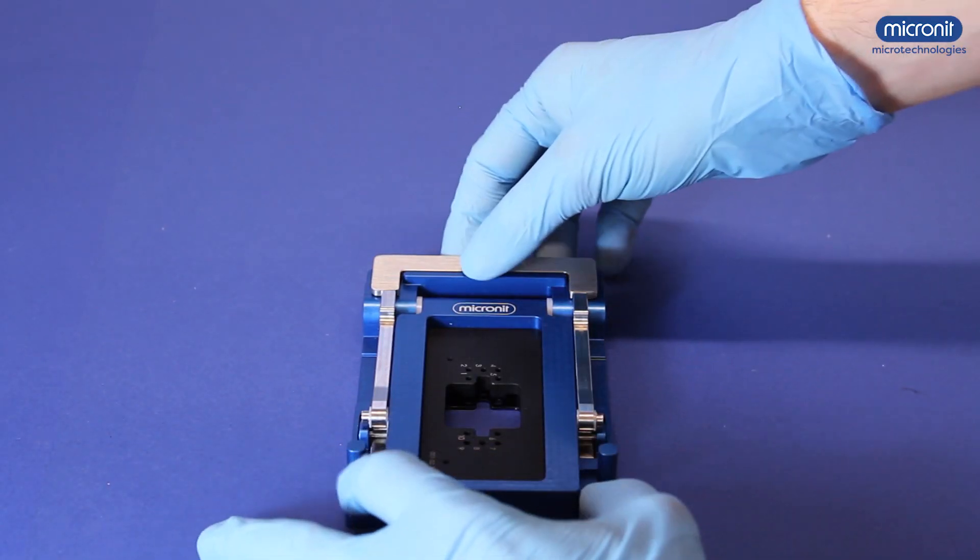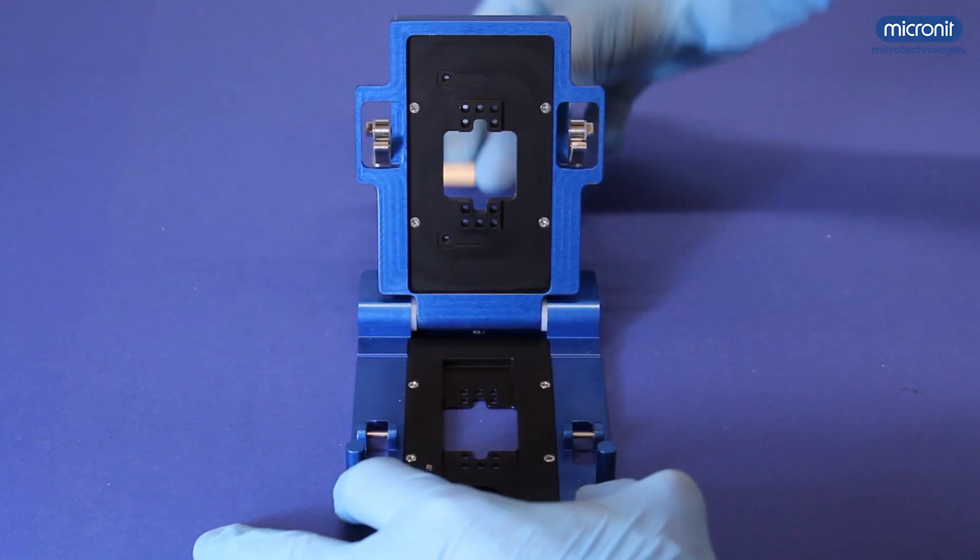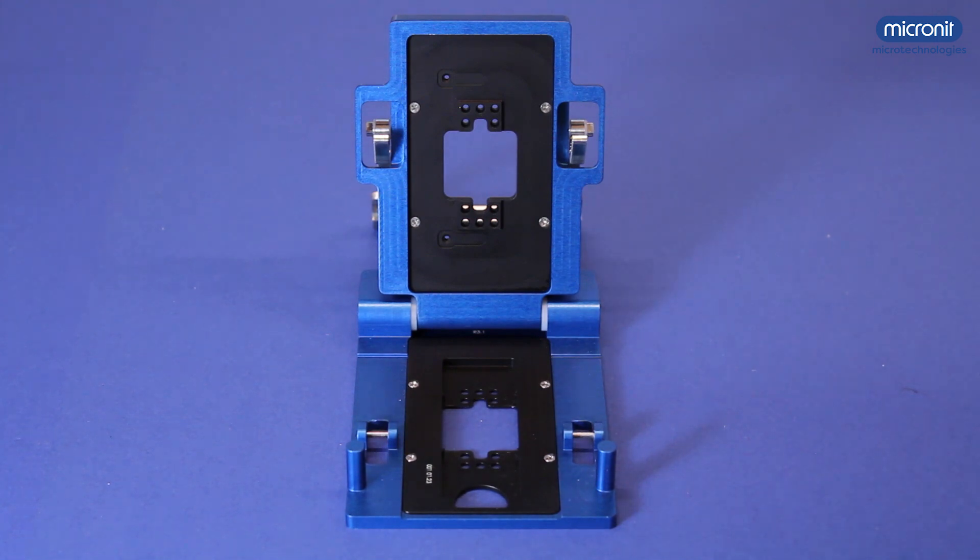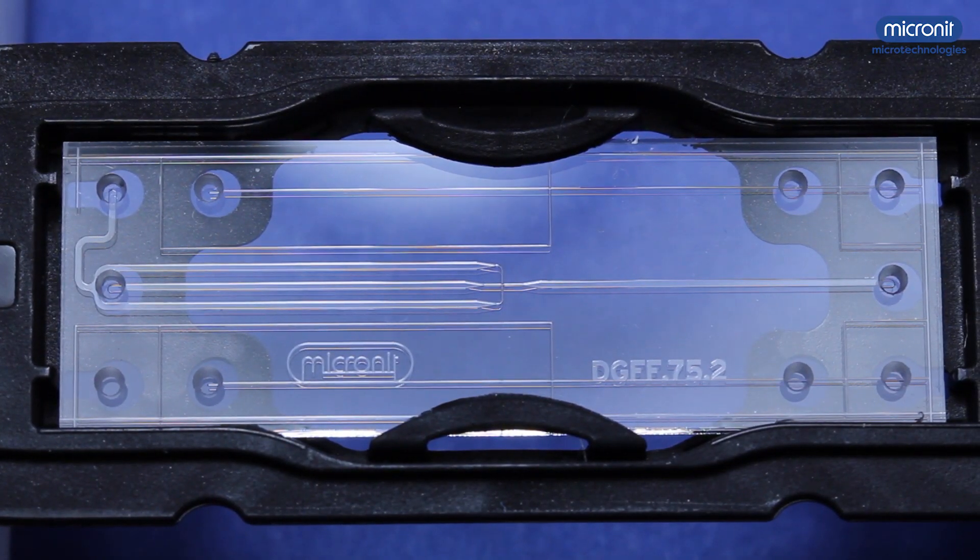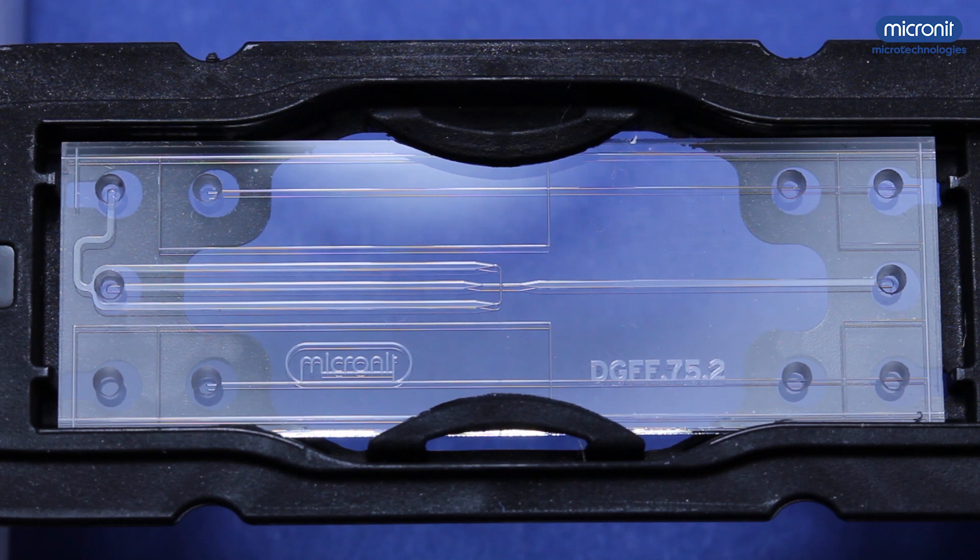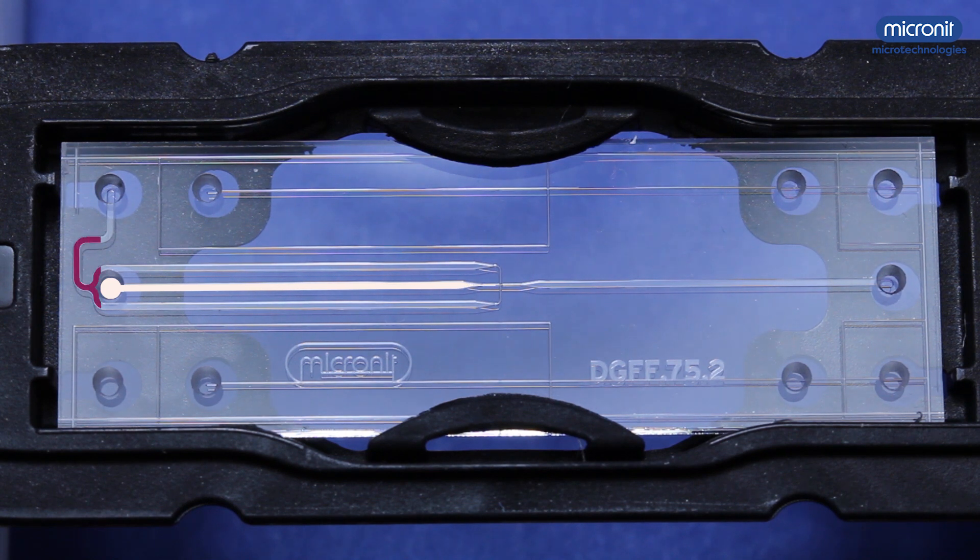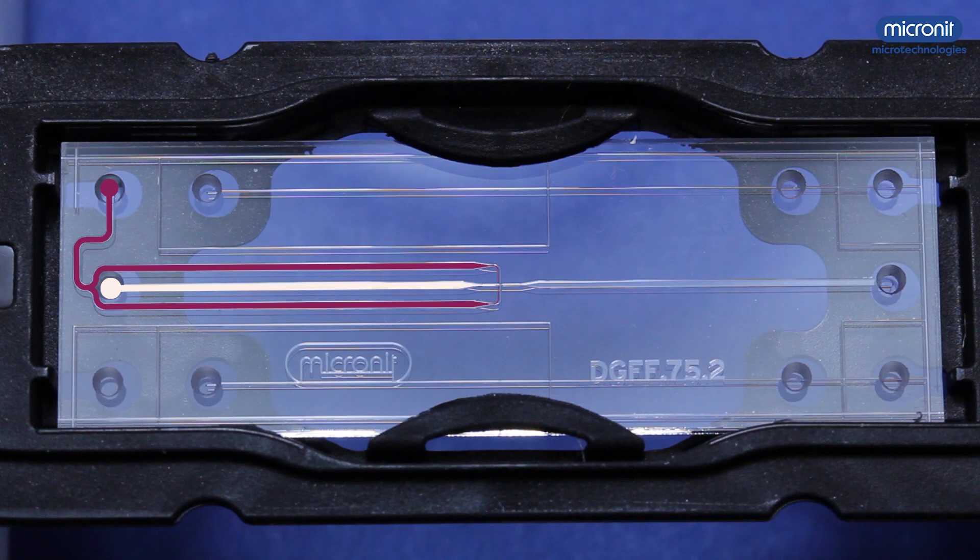Up next is the chip holder. Let's open it. Take your droplet generator chip and investigate which holes should be connected. In this case we have one inlet for the dispersed phase, going through the middle. The inlet above is for the continuous phase, going around it. And the formed droplets continue to this outlet.